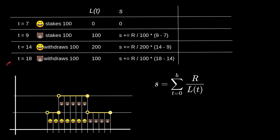At t equals 18, `lt` would have been 100 for the time between t equals 14 and t equals 18, so we add r divided by 100 multiplied by (18 minus 14).